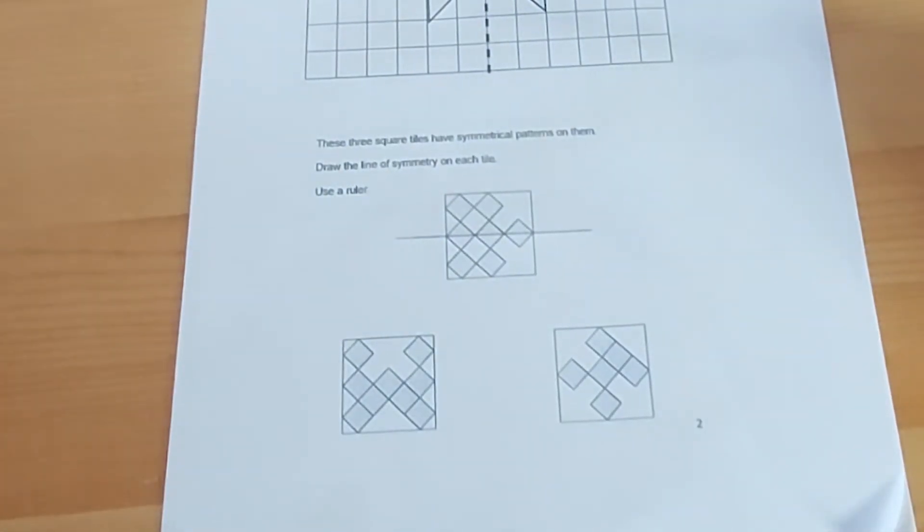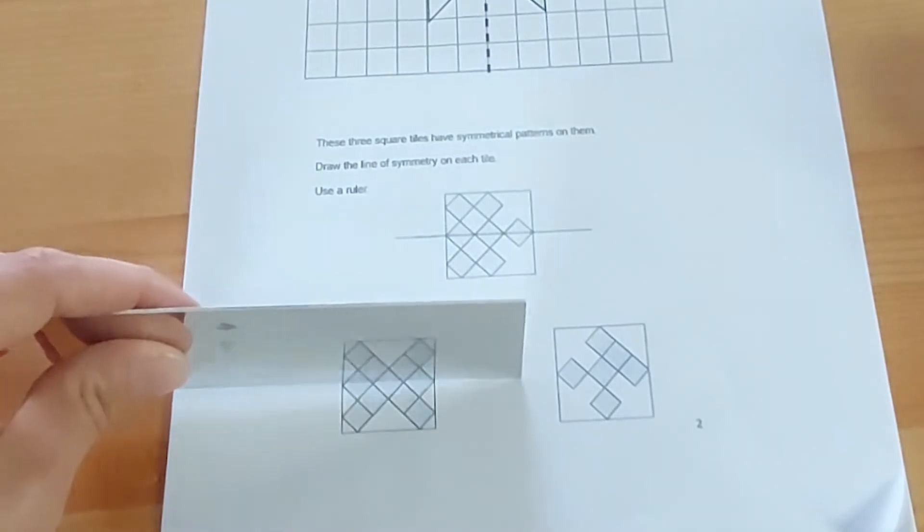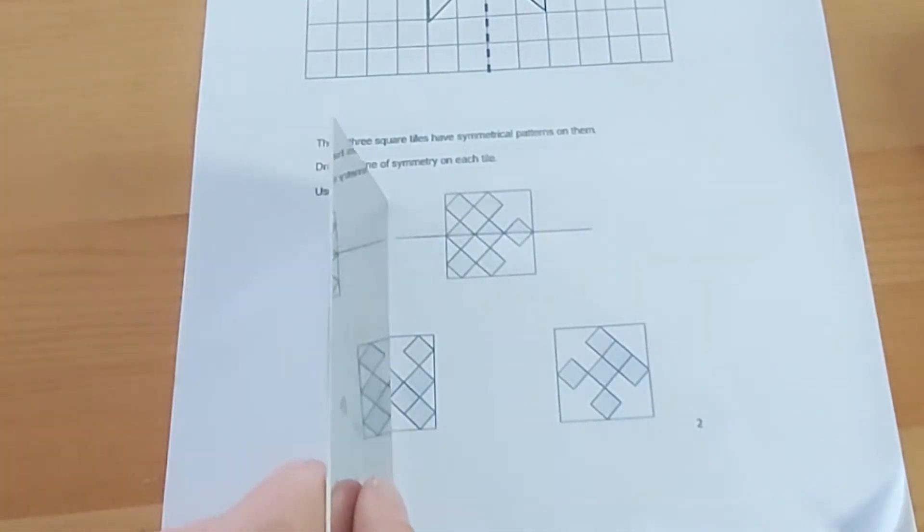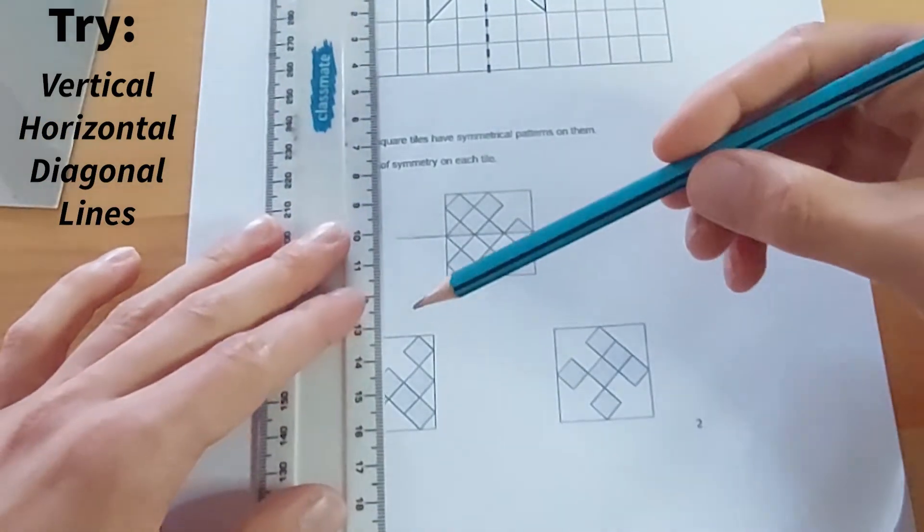And then I've got two other shapes to do. Is the line of symmetry the same way here? Does it look the same? No, it does not. What about if I go vertical? Does it look the same? Yes, it does. So I know that there's a line of symmetry straight down the middle.